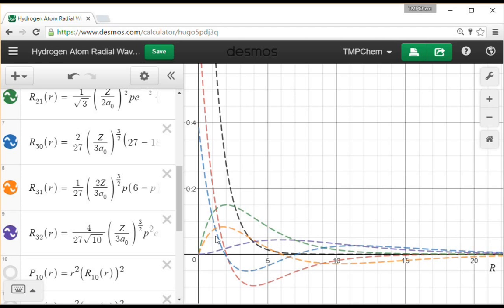R32 being the radial function of a 3d orbital, 0 radial nodes, and very slowly decaying away. So those are all the wave functions, but what we're interested in also looking at is the radial distribution function.